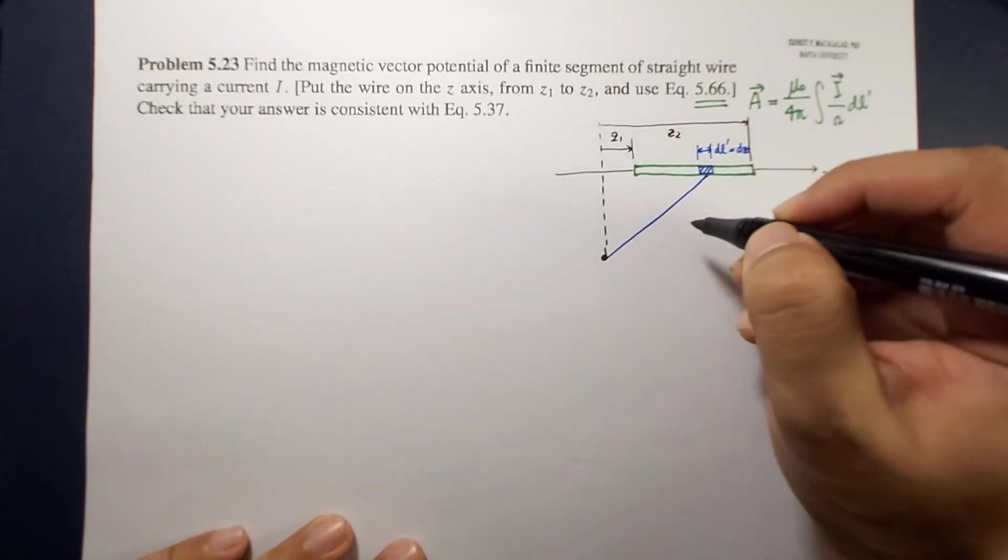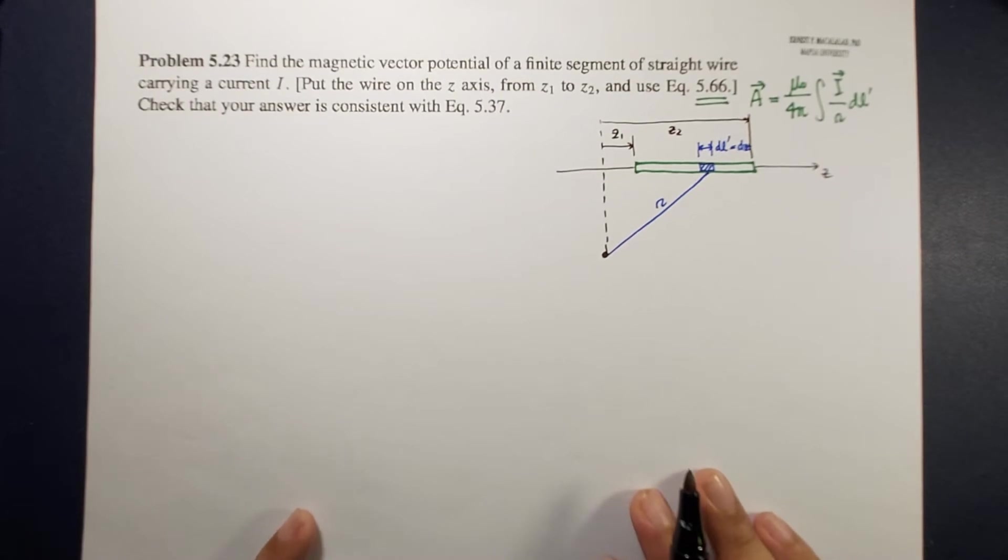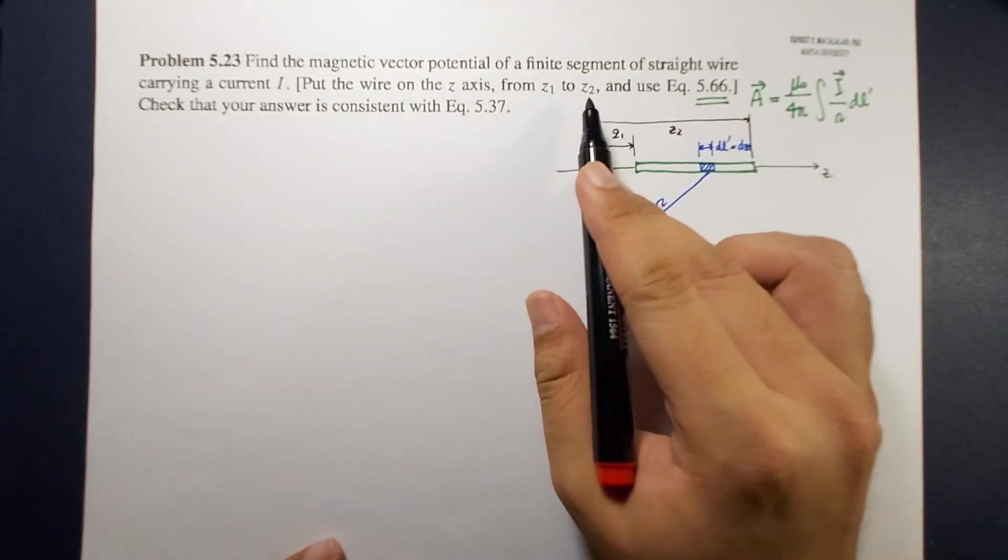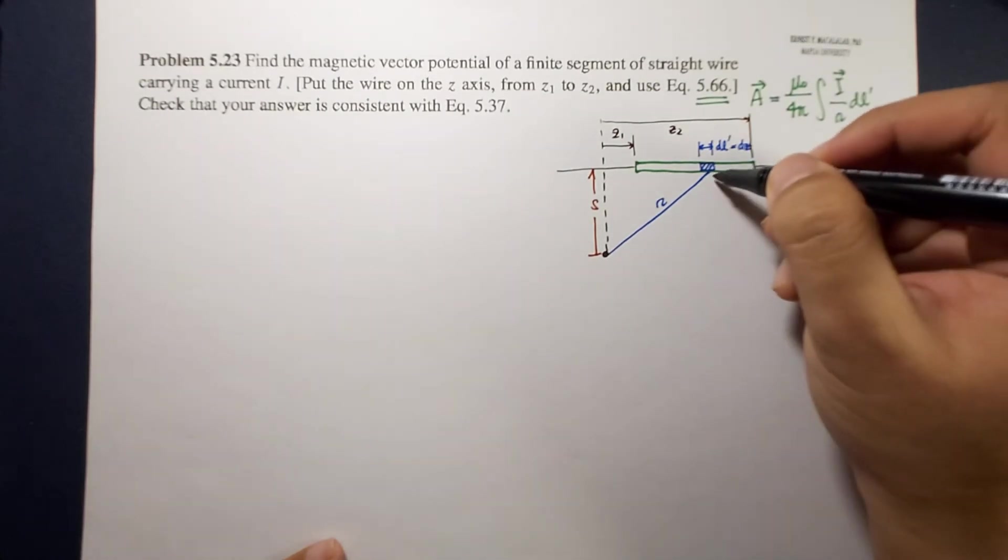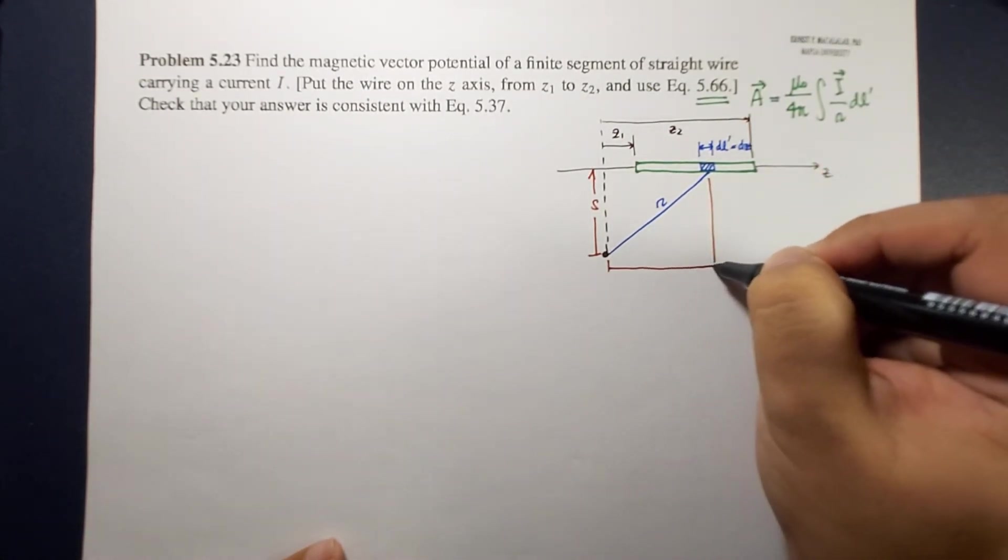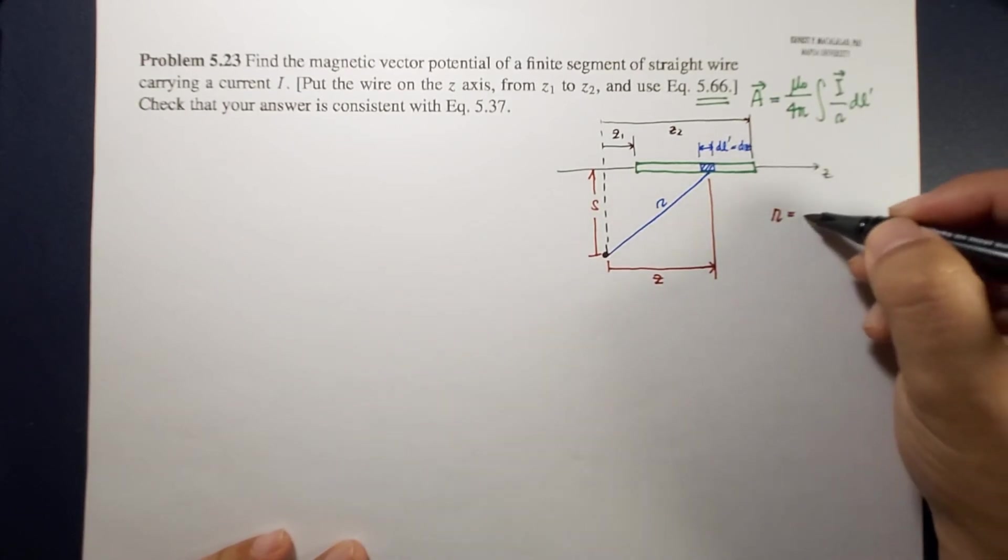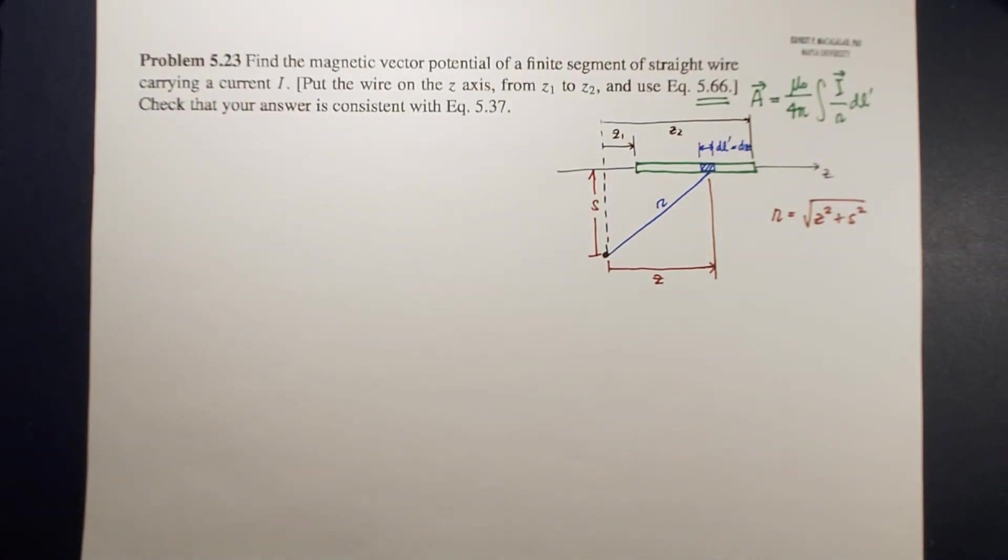So this will now be our script r. And then you can now calculate our vector potential. So remember that the line segment can be defined in terms of s, if this is your s and let's say this is your z, that means script r is equal to square root of z squared plus s squared.